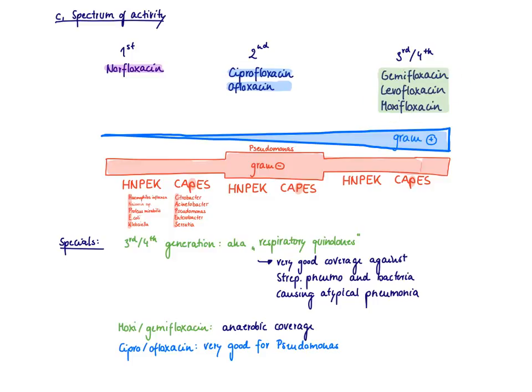Sometimes people call these newer floxacins also the respiratory quinolones because they have very good gram-positive coverage. They cover strep pneumo, but also they can cover all the bacteria causing atypical pneumonia. The only other special thing I want to mention is that moxifloxacin and gemifloxacin are very good in their anaerobic coverage, and none of the other quinolones have very good anaerobic coverage.